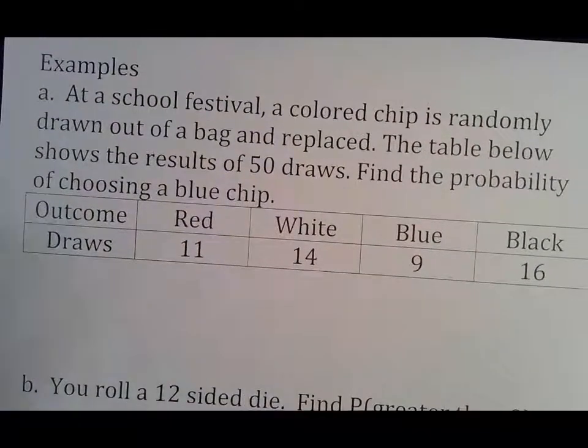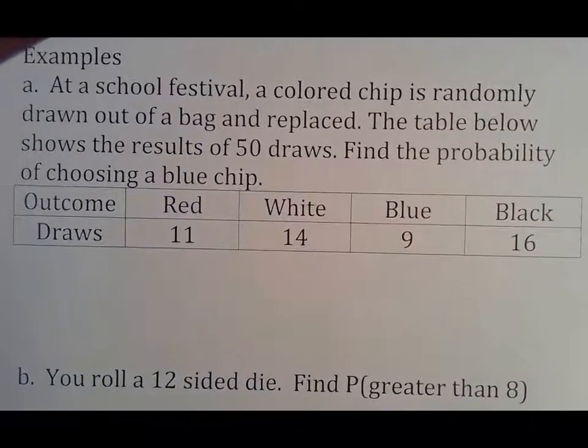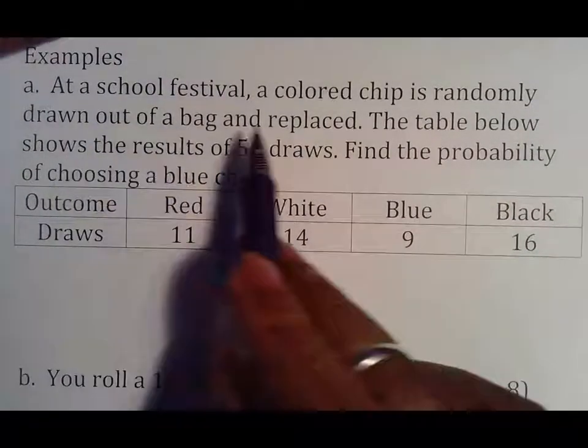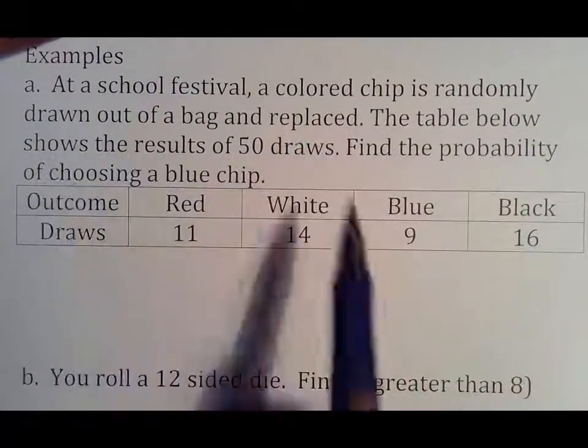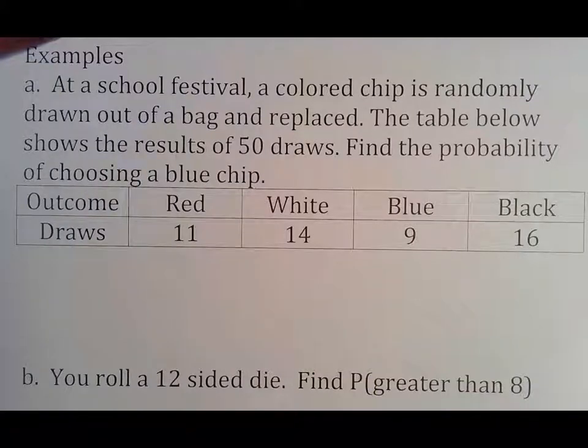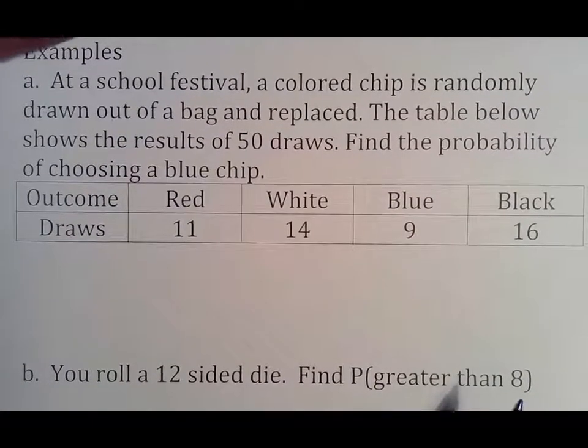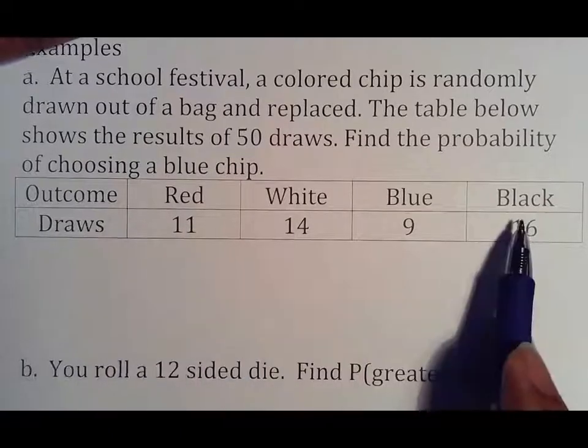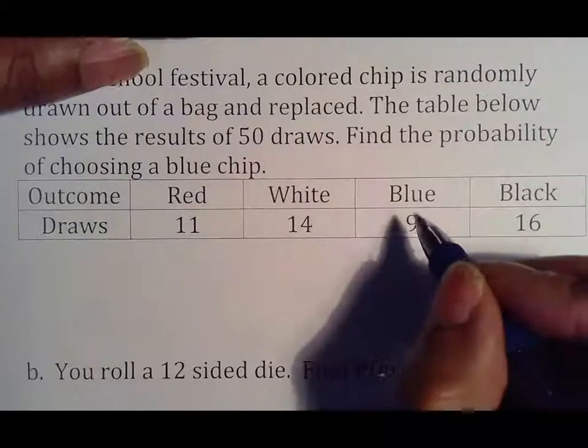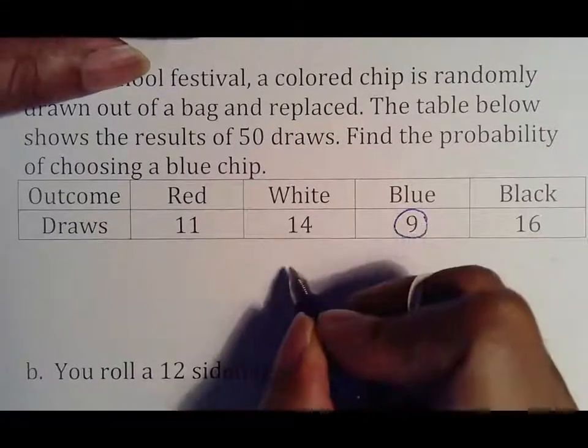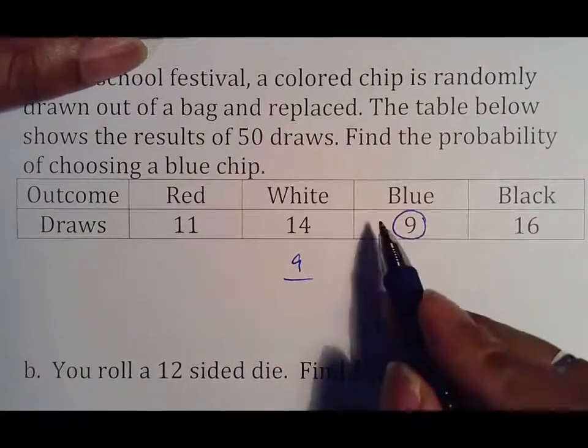You hardly ever have a percentage and add it or subtract it or divide it. It's usually going to be multiplication. Here's another experiment. At a school festival, a colored chip is randomly drawn out of a bag and replaced. The table below shows the results of 50 draws. Find the probability of choosing a blue chip.